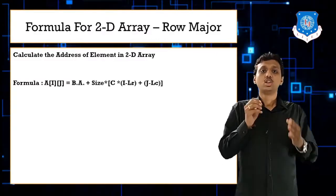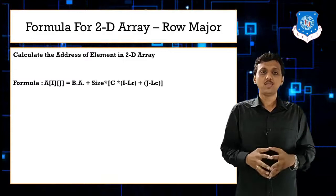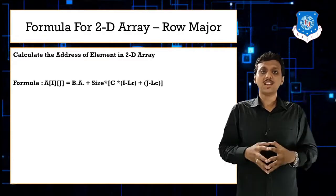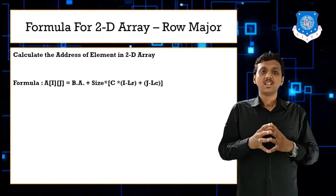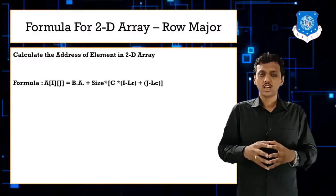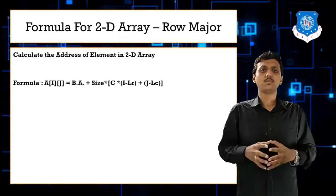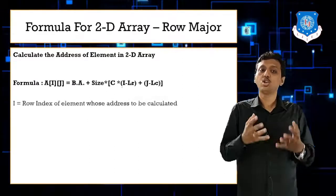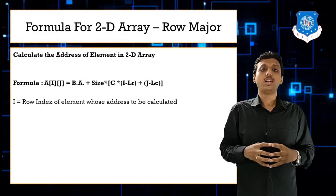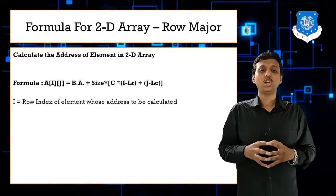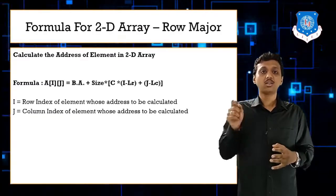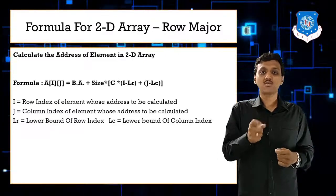The formula for row major memory address calculation is: A[i][j] = base address + size × (C × (i - LR) + (j - LC)). There are some new terms here. i is the row index, j is the column index, and BA stands for base address.